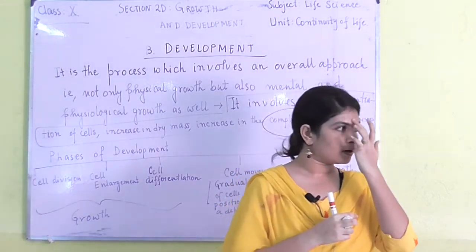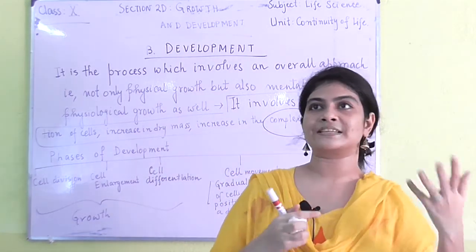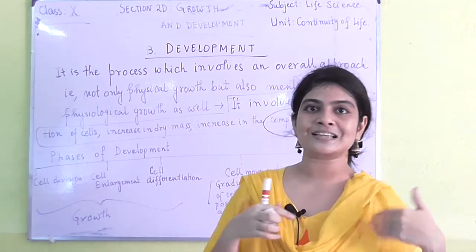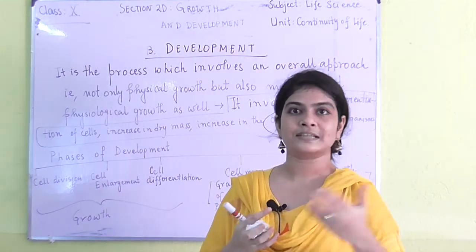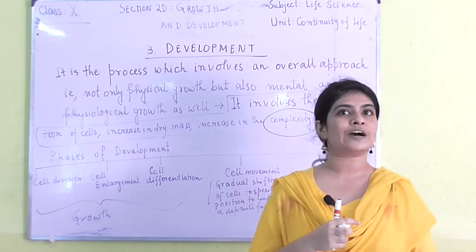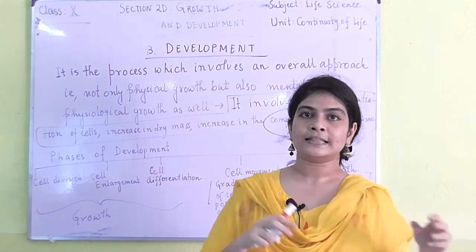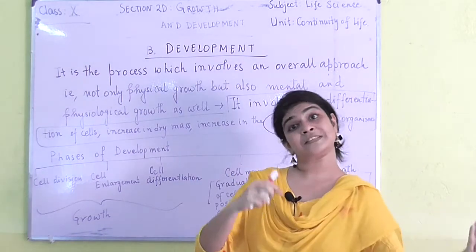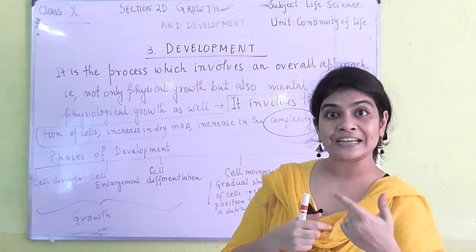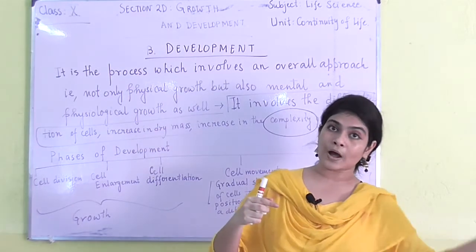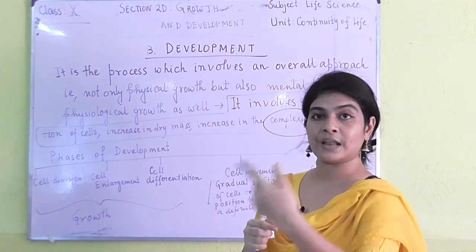For example, in the case of our immune system, once a germ, virus, or bacteria enters our body, our body reacts against it. It launches soldiers — the WBC or leukocytes. Macrophages, neutrophils, basophils — all these soldier cells come to the specific site of that wound or infection and fight the germs. They are shifting their position to a specific location to undergo a specific function for the development of the body.